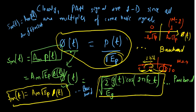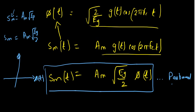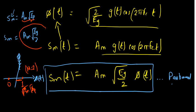Any s_m in baseband has coordinate A_m · √E_p, and in passband has coordinate A_m · √(E_g/2). For M=2, we have two points on the φ(t) axis. This passband digital PAM is also called ASK — Amplitude Shift Keying. The distance in the signal space is A_m · √E_p for baseband and A_m · √(E_g/2) for passband.